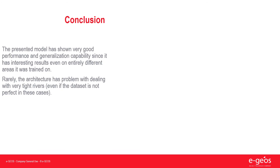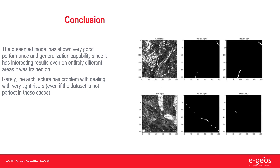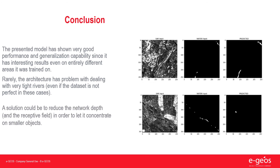In conclusion, the presented model has shown very good performance and generalization capability, since it has interesting results even on entirely different areas from those it was trained on. Clearly, the architecture has problems dealing with very tight rivers, even if the dataset label quality is not perfect in these cases, as we can see on the right part of the slide. A solution could be to reduce the network depth and the receptive field, in order to let the network concentrate on smaller objects.